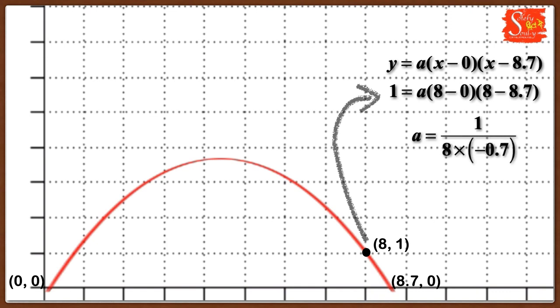When you plug in this value of a into the main equation, then finally the simplified equation will be 10x² + 56y = 87.